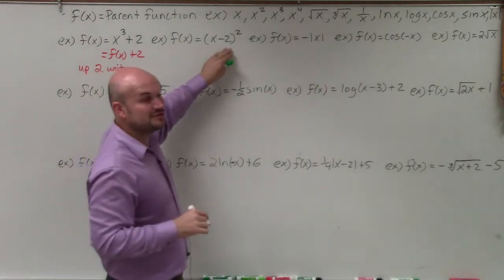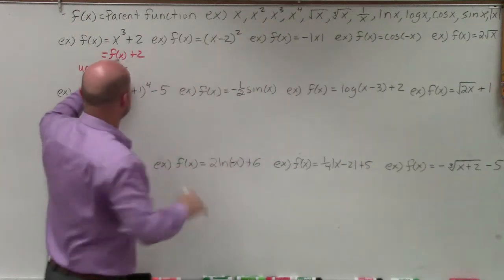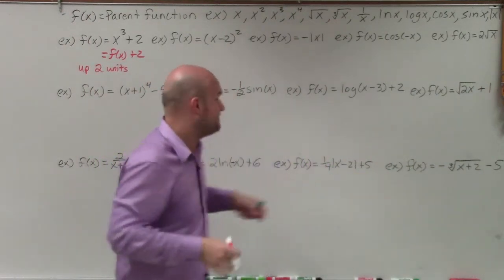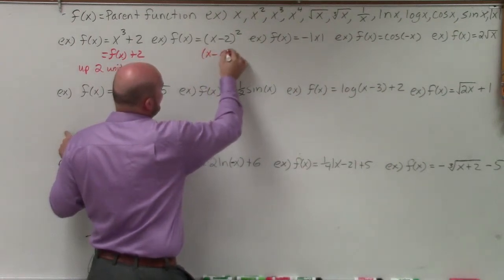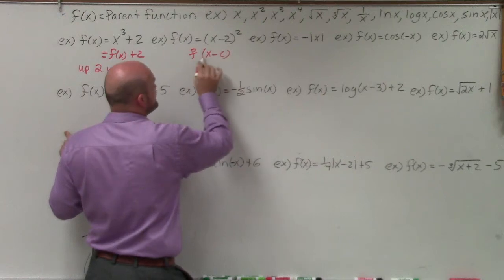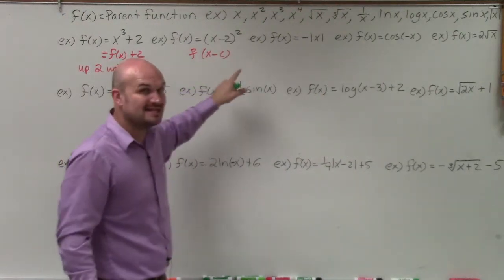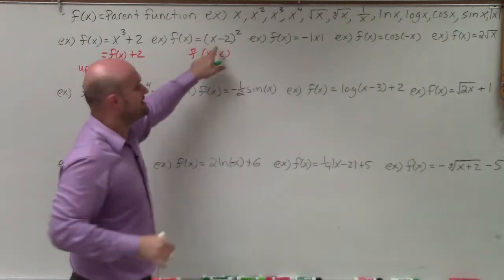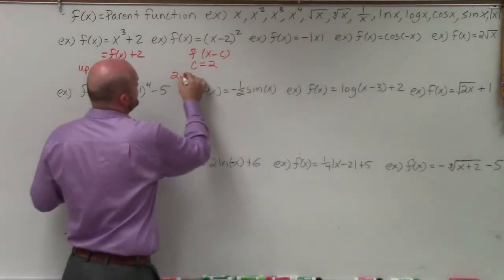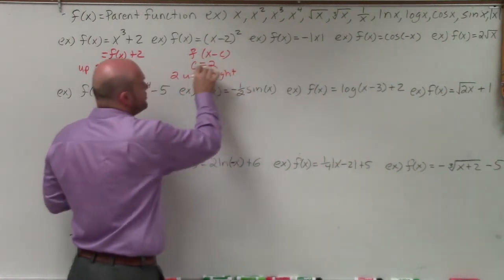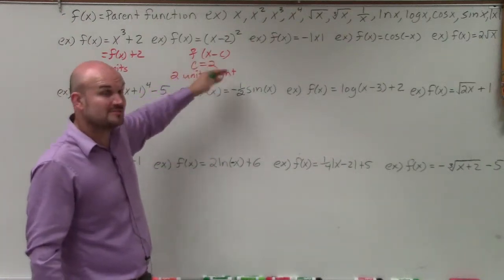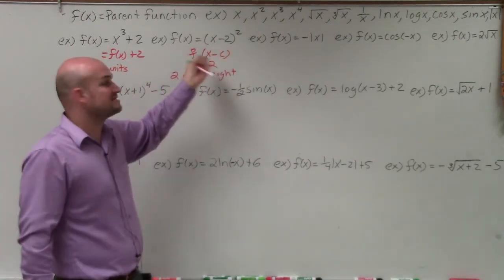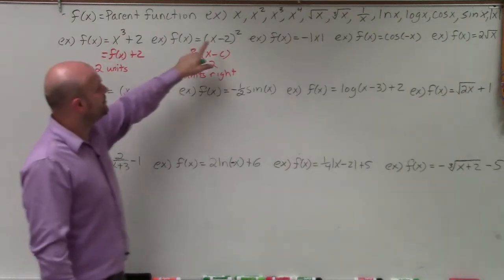In this next example, I'm using x squared, but now the function is (x minus 2) squared. I'm subtracting 2 inside the function. When it's x minus c, c is positive — in this case c equals 2 — so that tells me 2 units to the right. A lot of students get confused here: for vertical translations, positive goes up and negative goes down, but when it's inside the function, it's the opposite.